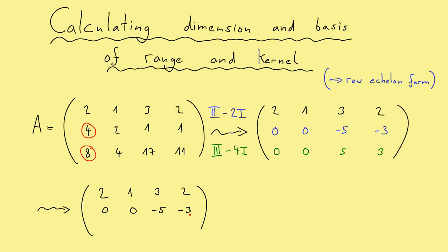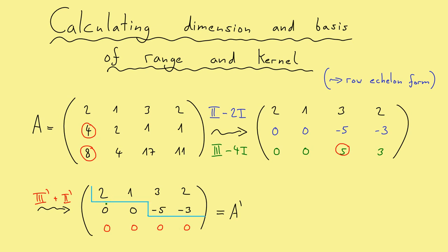I copy the first two rows and now want to generate a zero here. In order to do this I take the new third row and just add the new second row. Then I don't change anything here, but I add minus 5 and 5 so I get zero here, and also zero here in the last column. And now we reach the row echelon form. Let's call it A'. This is indeed a row echelon form because we have these nice steps here, and all zero rows are at the bottom. The elements in the corner, which are always non-zero, are called the pivots. In this example we have exactly two pivots.